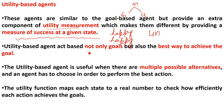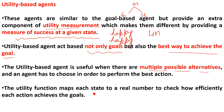Utility-based agents act based not only on goals, but also on the best way to achieve the goal — meaning we take the shortest route to reach Montreal. Utility-based agents are useful when there are multiple possible alternatives, because if we are unhappy at any state, we can change to another route. The utility function maps each state to a real number to check how efficiently each function achieves the goal. If a question asks which agent requires multiple possible alternatives, the answer is utility-based.